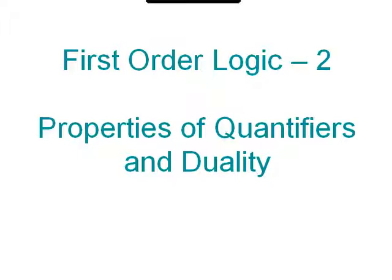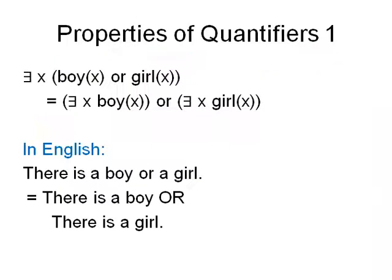This is a continuation of a lecture on quantifiers where we look at the properties of quantifiers and duality. This is part of first order logic continuation. So what are properties of quantifiers?